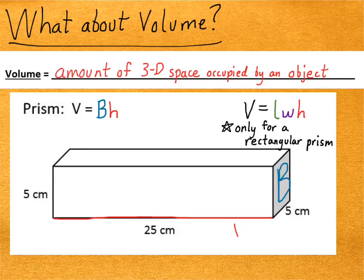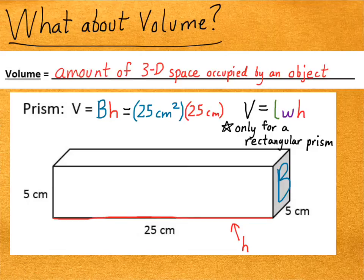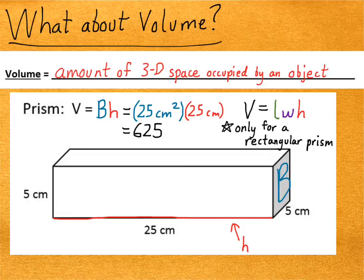Here, we already know what the area of the base and the height are, so we can just plug them in. The area of the base is 25 square centimeters, so that's 5 times 5. Then we multiply by the height, which is 25 centimeters. That would give us 625. What would the units be? Well, we have centimeters squared times another centimeters, so that would be centimeters cubed. The units for surface area are squared. The units for volume are cubed.